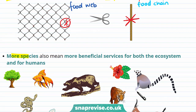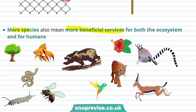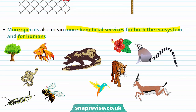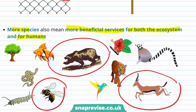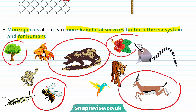More species can also mean more beneficial services for both the ecosystem and for humans. For example, bees are great pollinators and we rely on pollinators to get enough food that we can eat. Herbivores are often used for meat — for example, deer. Bears can control herbivore populations if they get too large. Some plants also contain medicines and may produce fruit and other natural resources. For example, aspirin, which is used to treat fever and as a pain reliever, comes from the bark of a willow tree.